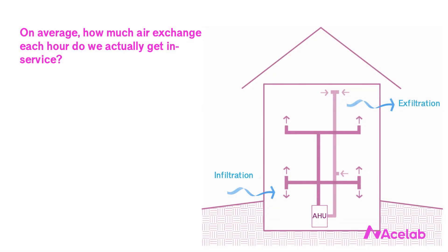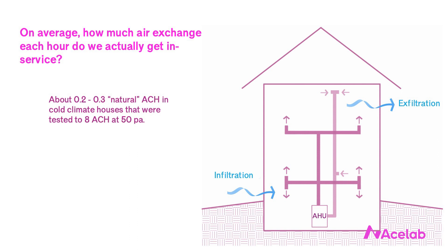Let's use some real numbers to put this in context. The National Research Council of Canada used tracer gas to determine the average in-service air exchange in homes that had been blower door tested to around 8 ACH at 50 pascals — pretty leaky enclosures. They found that on average these houses operated at 0.2 to 0.3 natural air changes per hour, meaning all the air in the house was being replaced about every three to four hours. This is an average — sometimes the air change would be more, sometimes a lot more, and sometimes very little.